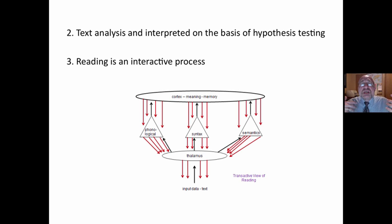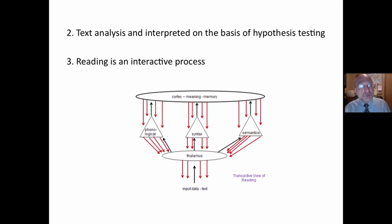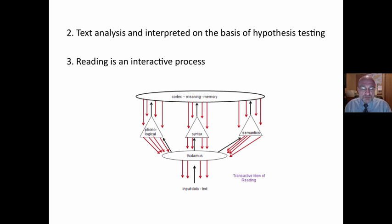Text is analyzed and interpreted on the basis of hypothesis testing. Remember, in reading, nine times more information is flowing from the cortex down than from the thalamus up. That means we're predicting what the next sentence might be or what the meaning might be, and then we're using cues — letter cues — to confirm or reconstruct the meaning. So reading is an interactive process: what is in the head mixes with what is on the page. Ken Goodman calls it a psycholinguistic guessing game — we guess and then we use text clues to confirm our guess or change our hypothesis.